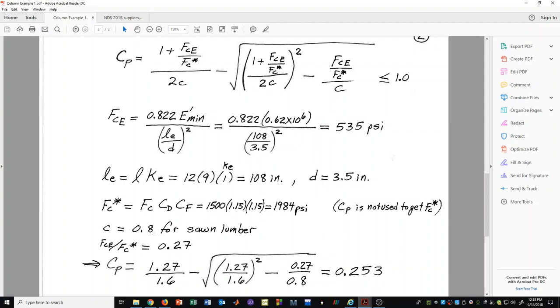For sawn lumber, it's 0.8. For glulam beams, you'll find some different values. But for our problem here, this is the correct value.